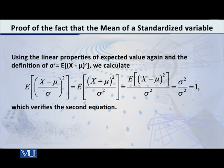In the numerator, what is the expected value of (x minus mu) whole square? My dear students, this is none other than the variance of x. The definition of variance is exactly the expected value of (x minus mu) whole square. So our overall expression is the variance of x over sigma square. The expected value of (x minus mu) whole square equals sigma square, i.e., variance over sigma square. So sigma square over sigma square equals 1, and that proves the second equation.